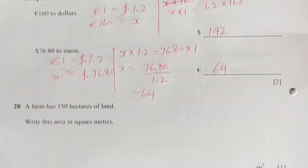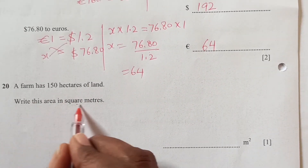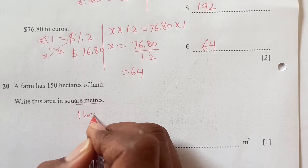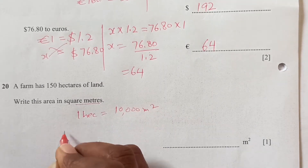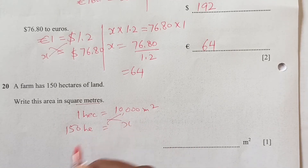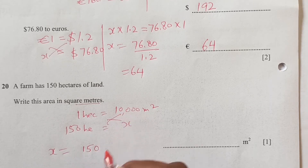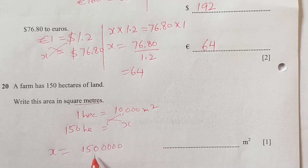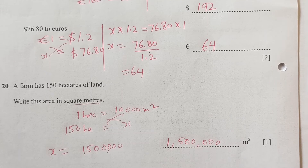A farm has 150 hectares of land. Write this area in square metres. Since 1 hectare = 10,000 m², cross multiply: 150 × 10,000 = 1,500,000 m².